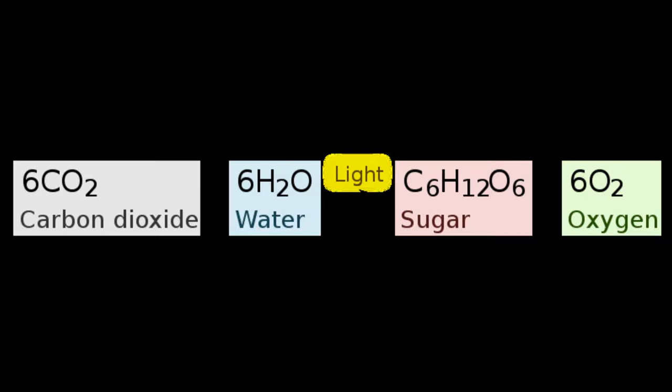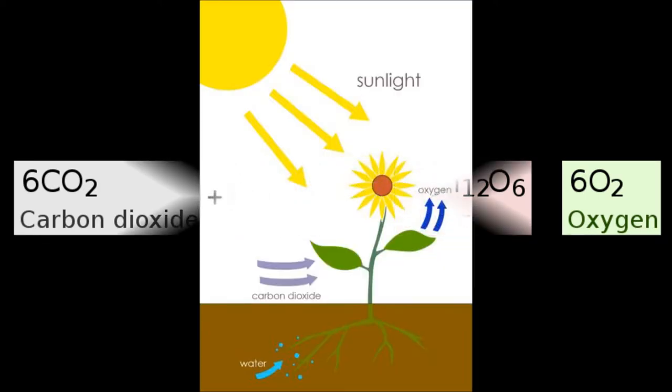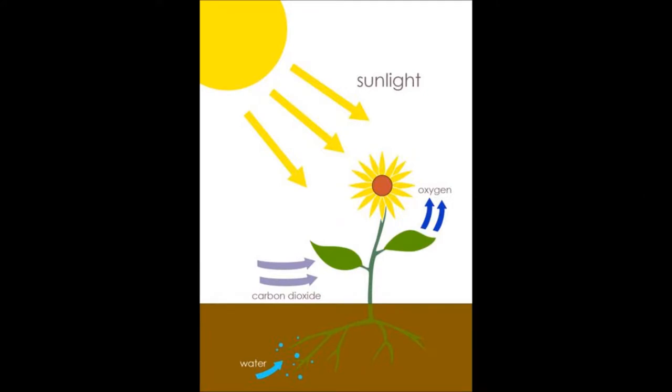The general equation of photosynthesis is 6CO2 plus 6H2O, with the help of light, yields C6H12O6 plus 6O2. This basically means water plus carbon dioxide plus sunlight produces glucose and oxygen.